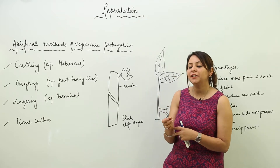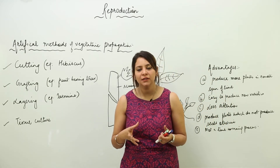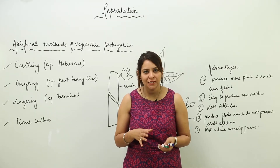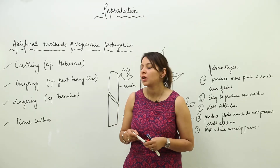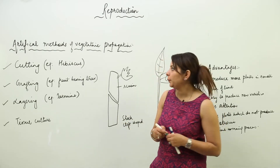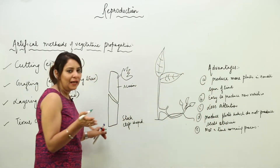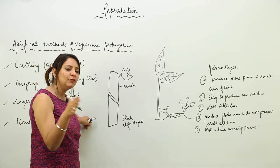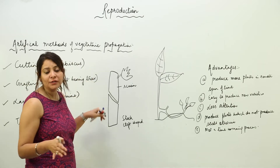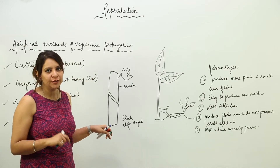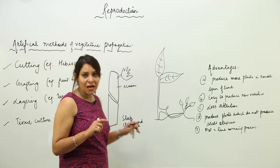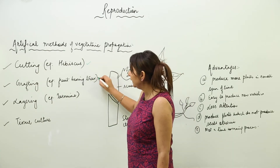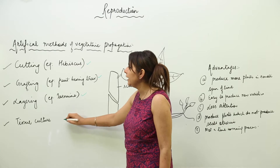We are going to take up the asexual method of reproduction in plants. One of the asexual reproduction methods is vegetative propagation. We have already studied vegetative propagation occurring naturally. Here we are going to study the artificial methods of vegetative propagation, which are cutting, grafting, layering, and tissue culture.